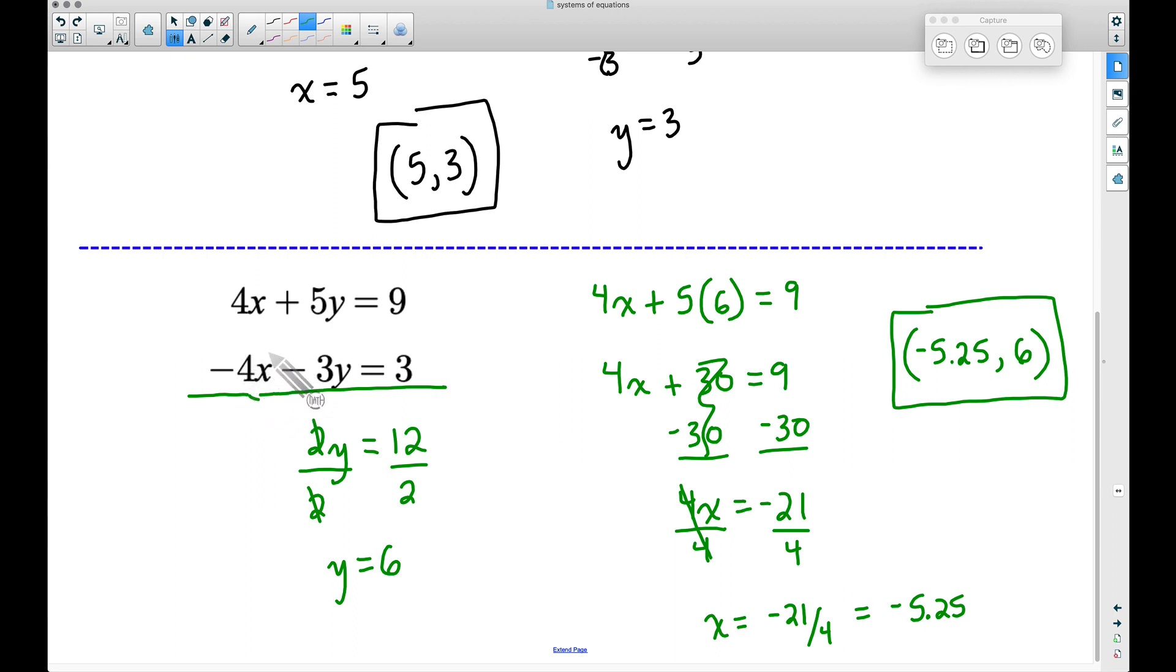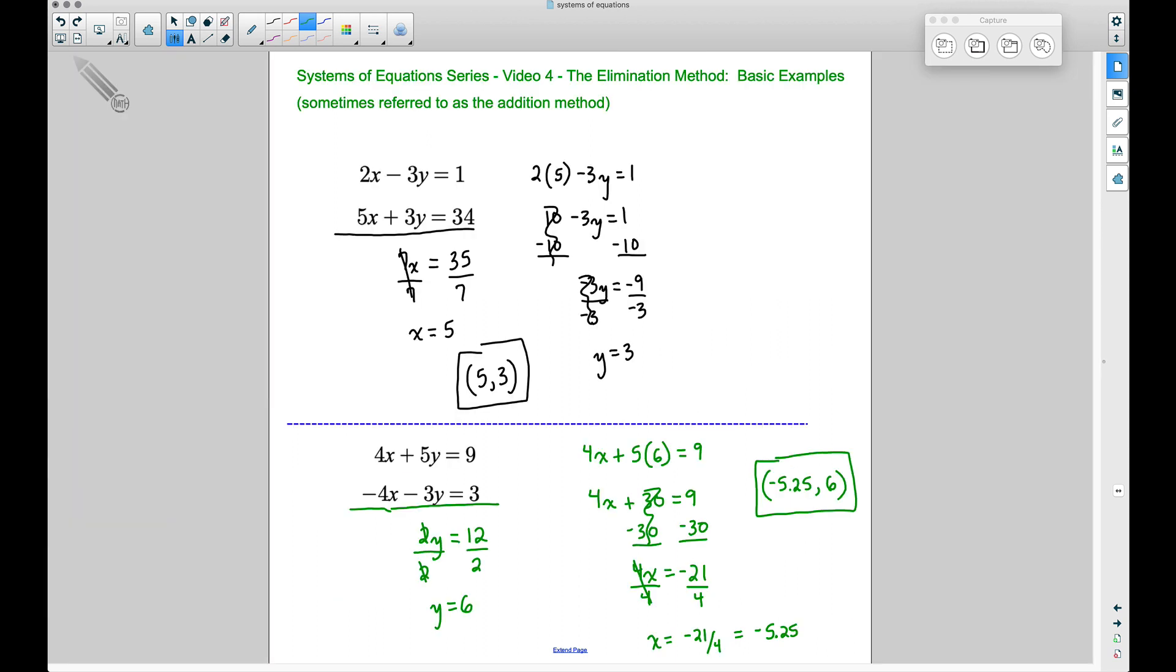21 minus 18 does give us 3. Therefore, this is the solution to our second example. And there you have it—two basic examples.